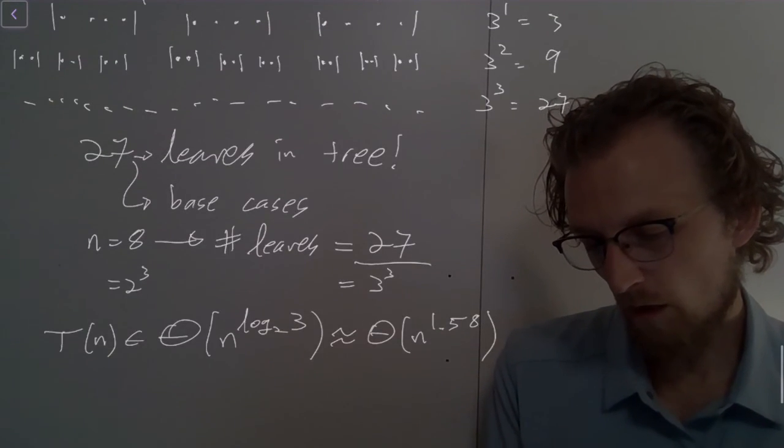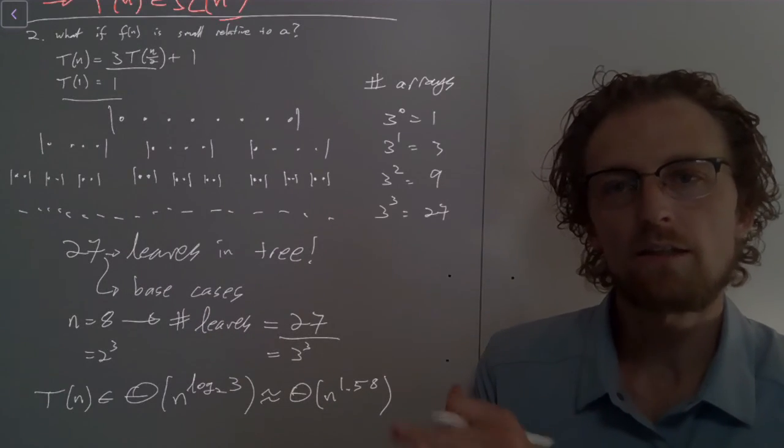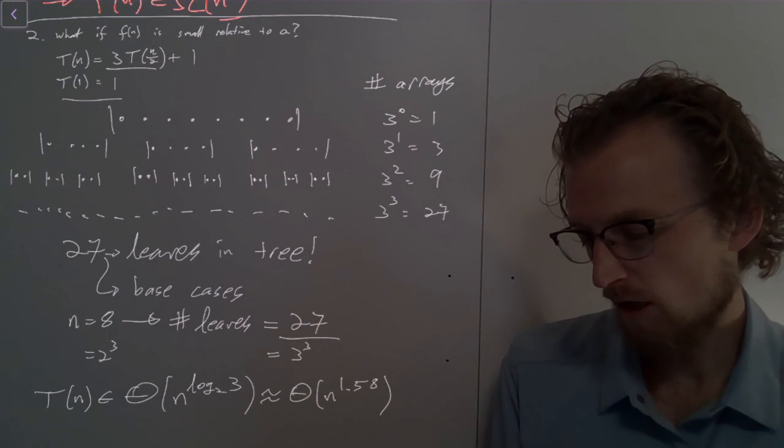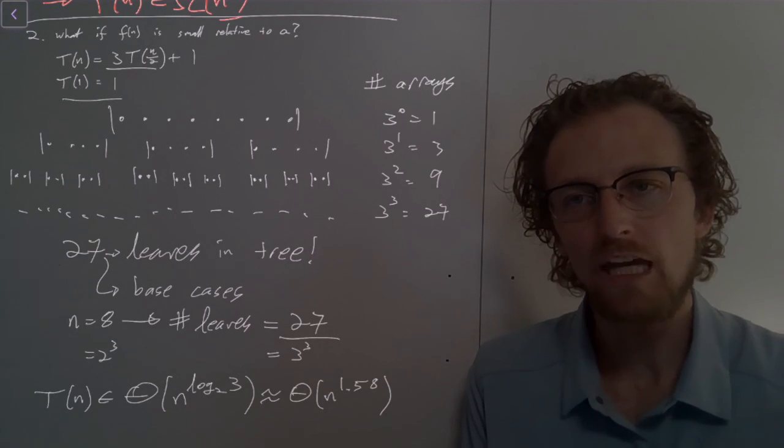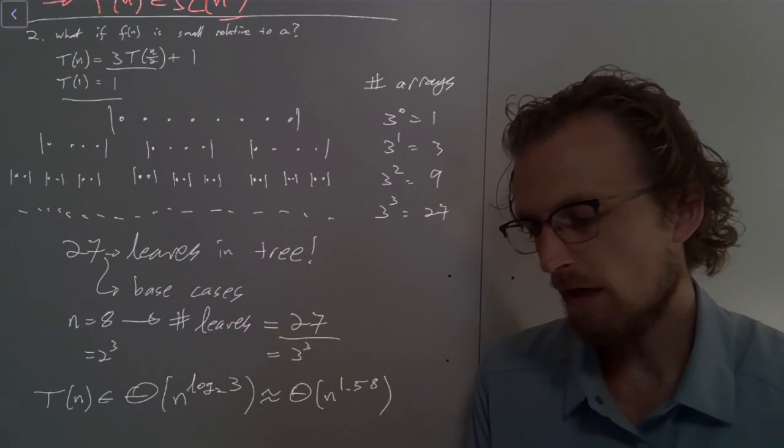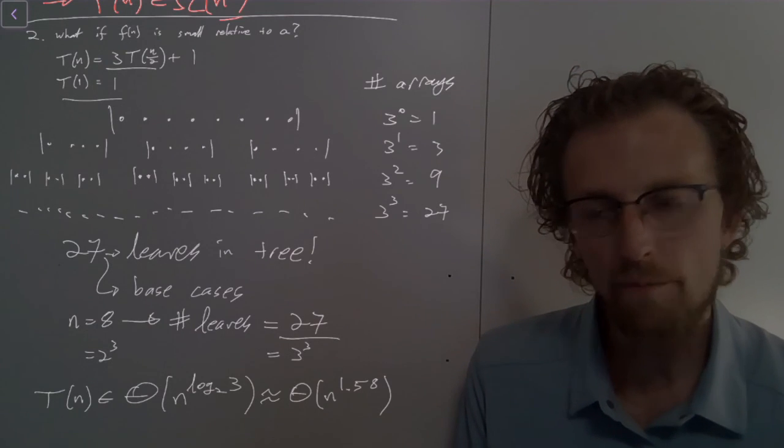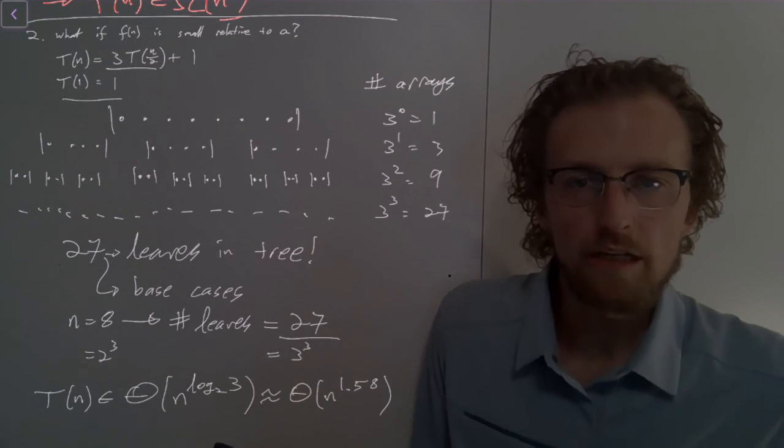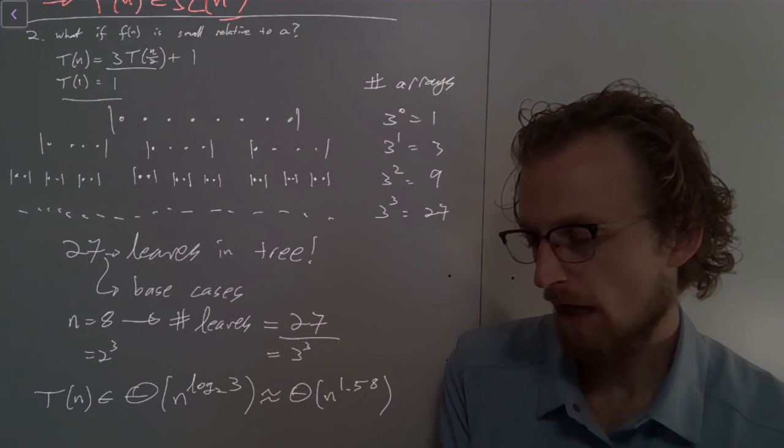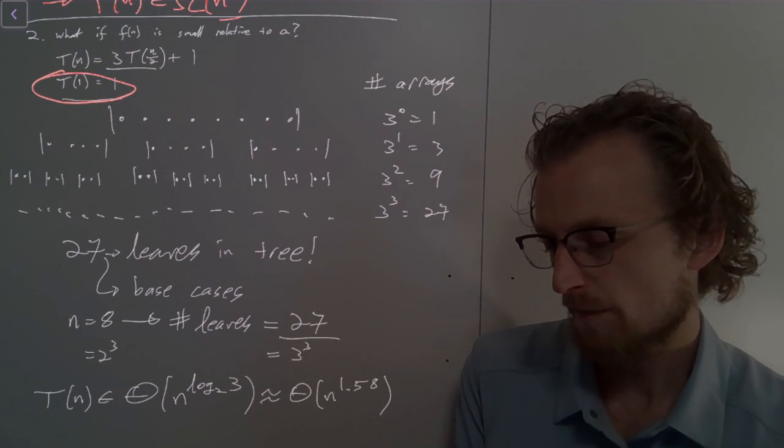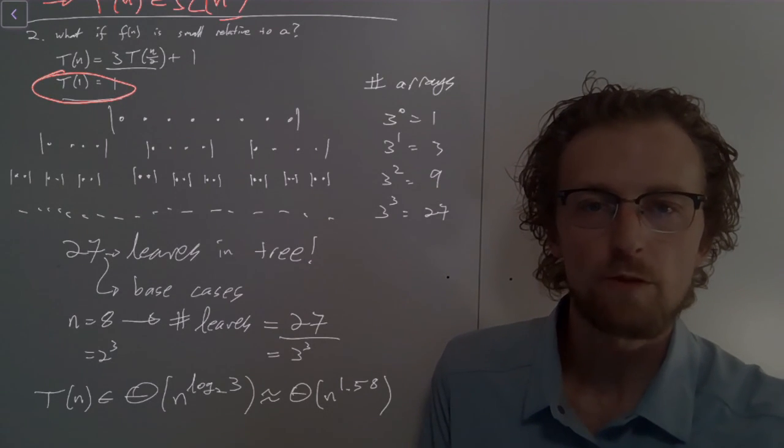So what does this mean? Well, n to the 1.58 isn't completely obviously connected to anything that we see here on the page. But essentially what it means is that we can have a case where the f(n) is small and the a dominates. And what that means for the a to dominate is that the majority of our complexity in our algorithm actually comes from executions of the recursion base case. And so that's what this scenario is capturing for us.